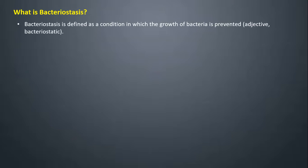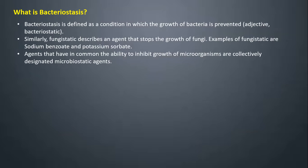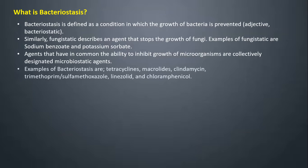Bacteriostasis is defined as a condition in which the growth of bacteria is prevented. Similarly, fungostatic describes an agent that stops the growth of fungi. Examples of fungostatic agents are sodium benzoate and potassium sorbate. Agents that share the ability to inhibit growth of microorganisms are collectively designated microbiostatic agents. Examples of bacteriostasis include tetracyclines, macrolides, clindamycin, trimethoprim, sulfamethoxazole, linezolid, and chloramphenicol.